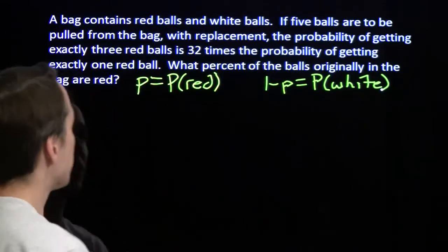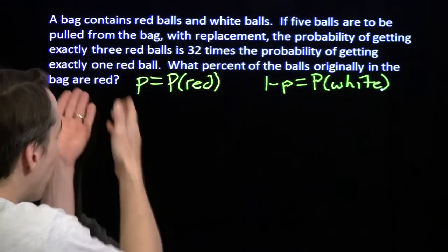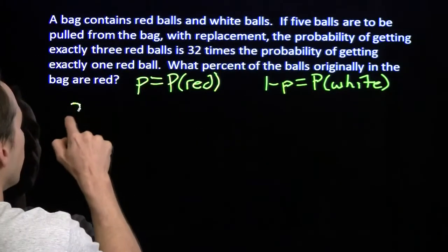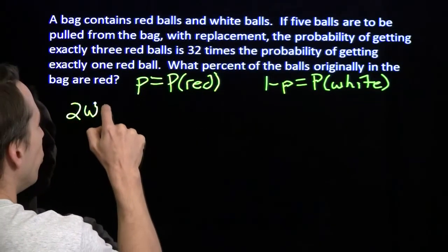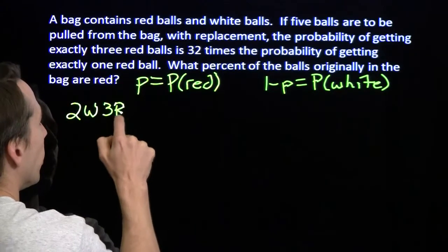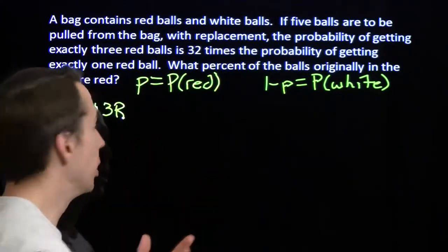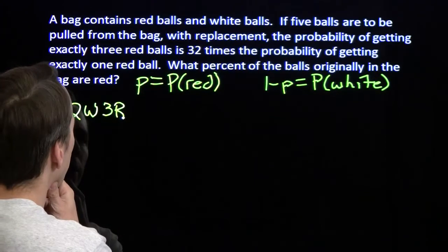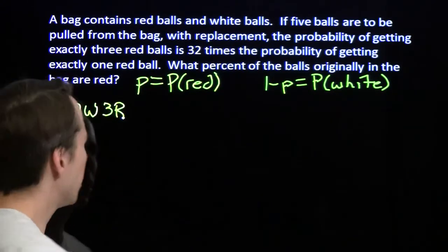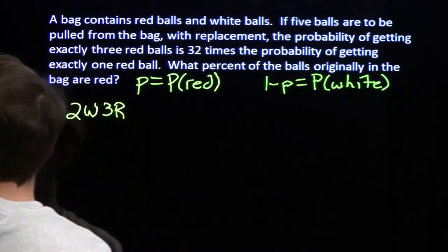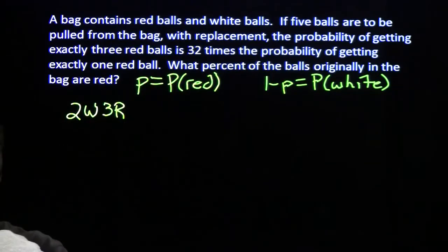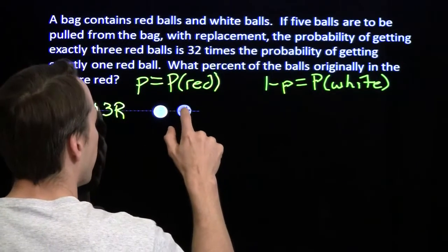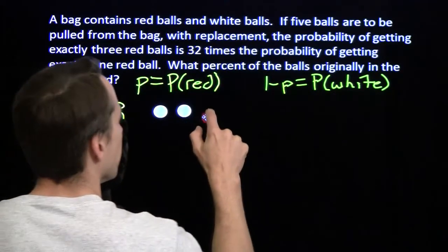Now we just have to write those expressions — one for exactly three red balls, one for exactly one red ball. We'll start with three red, which means we also have two white balls. We'll start by thinking about a single sequence: one possibility is to pull the two whites out first and then the three reds.